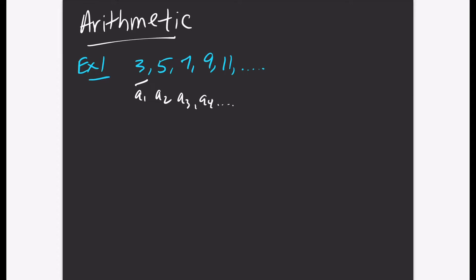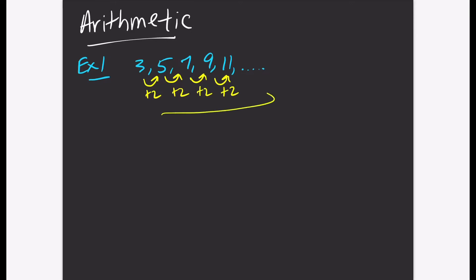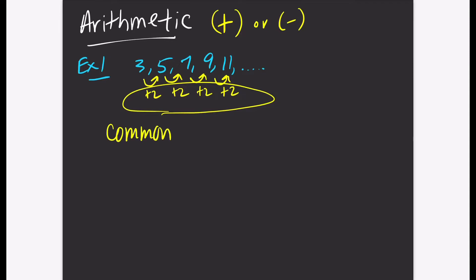Let's find the pattern. To get from 3 to 5 you add 2, from 5 to 7 you add 2, from 7 to 9 you add 2, and from 9 to 11 you add 2. Notice that our pattern is the same — it's plus 2 every single time. That's what makes the sequence arithmetic. If you add or subtract by the same number every single time, that is arithmetic, and that's your common difference. The common difference for this example is 2, so D equals 2.